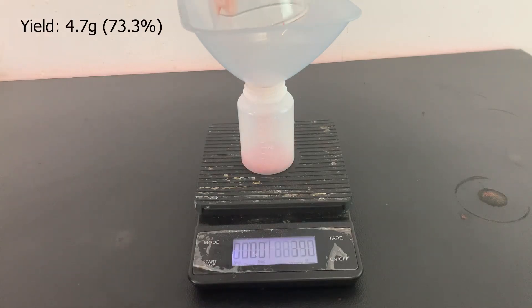Once the methyl orange is dry, I measured the yield I got. I got 4.7 grams of product which is a 73.3% yield based on the starting amount of sulfonylic acid.